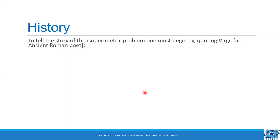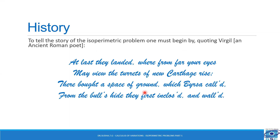To tell the story of the isoperimetric problem, one must begin by quoting Virgil, an ancient Roman poet: 'At last they landed where from far your eyes may view the turrets of new Carthage rise. They brought a space of ground which Dido called, from the bull's hide they first enclosed and bought.' This is taken from the Latin literature, the epic Aeneid.